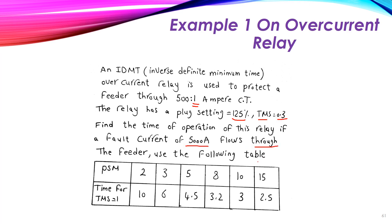We use the following table to find the operating time. The table gives the plug setting multiplier (PSM) values of 2, 3, 5, 8 — meaning two times, three times, five times the pickup current, and so on — with corresponding times at TMS equal to 1. At PSM=8, for example, the time is 3.2 seconds. Remember the table is for TMS equal to 1, but the required TMS is 0.3.